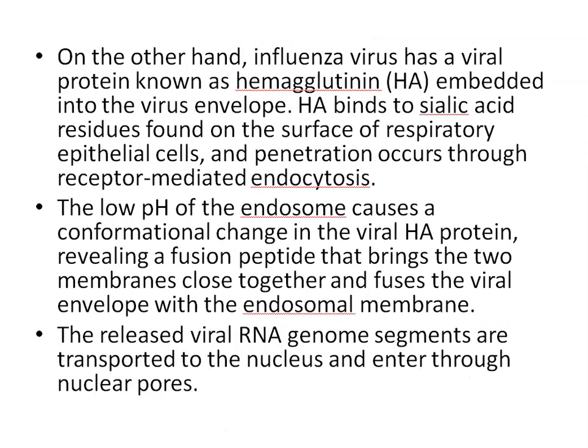On the other hand, influenza virus has a viral protein known as hemagglutinin (HA), embedded into the viral envelope. HA binds to sialic acid found on the surface of respiratory epithelial cells, and penetration occurs through receptor-mediated endocytosis. The low pH of the endosome causes a conformational change in the viral HA protein, revealing a fusion peptide that brings the two membranes together to fuse the viral envelope with the endosome membrane. The released viral RNA genome segments are then transported to the nucleus and enter through the nuclear pore.